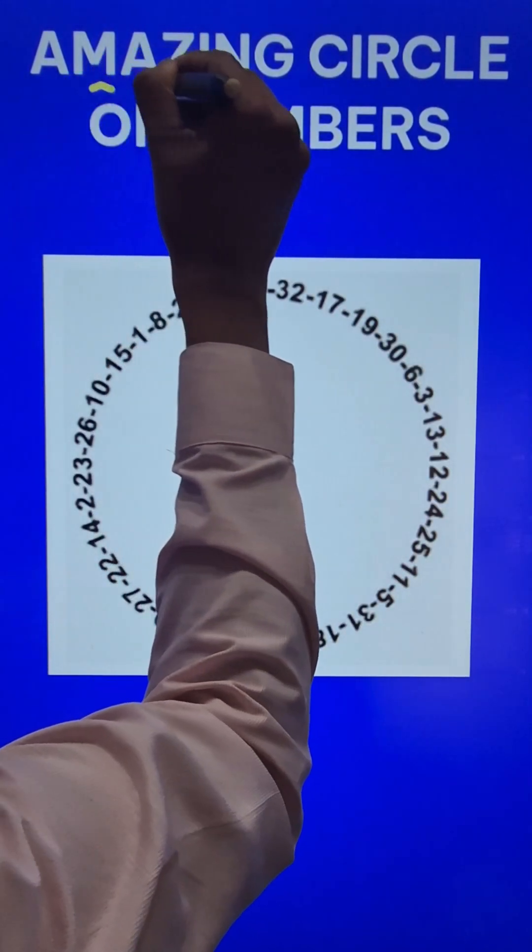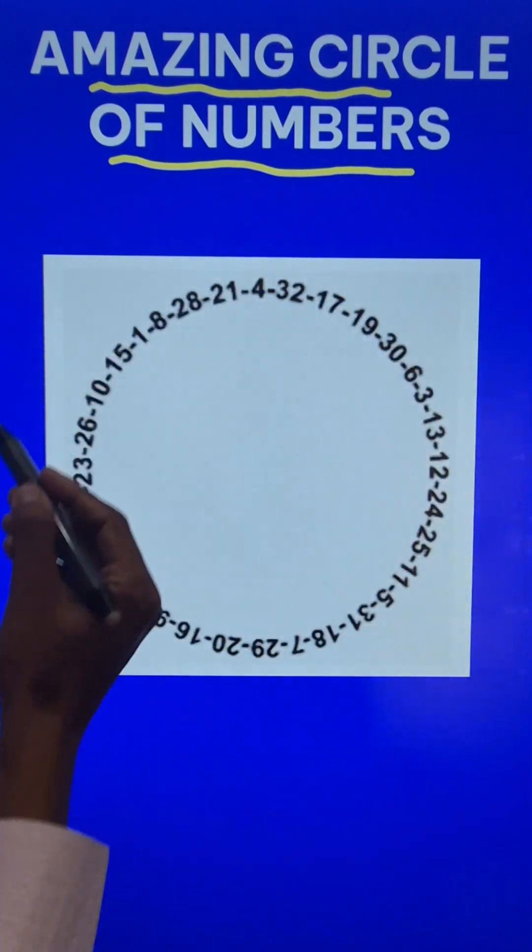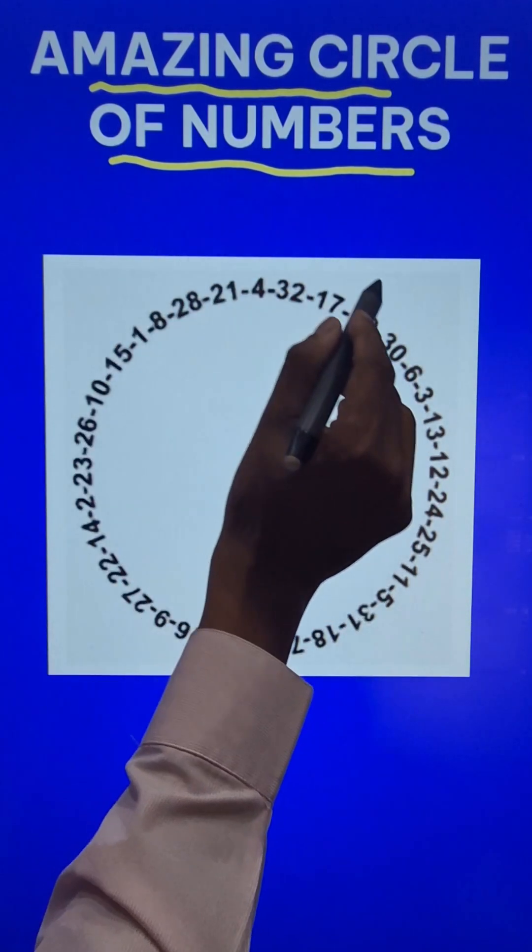Here is an amazing circle of numbers. As you can see here, some numbers are arranged one after the other in a circle.